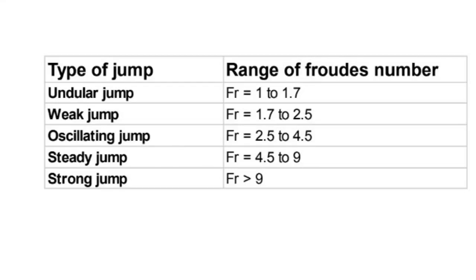Hello friends, now I'm going to explain the classification of hydraulic jump based on Froude's number. Firstly, let me tell you about the difference between Reynolds number and Froude's number. Reynolds number is used in pipe flow, where the predominant forces are viscous forces, whereas in Froude's number the predominant forces are gravitational forces.